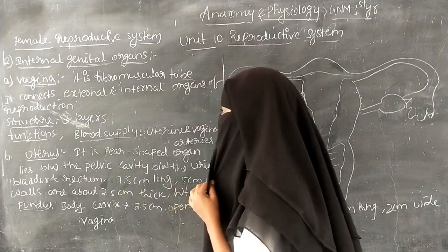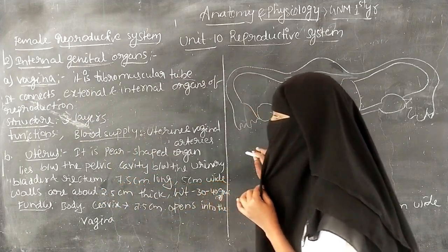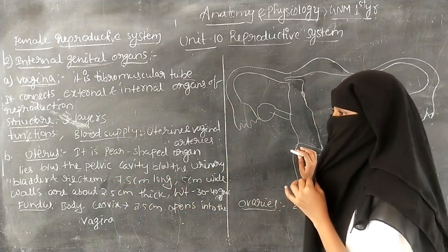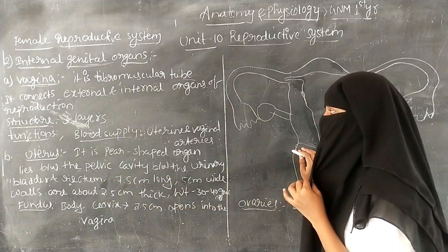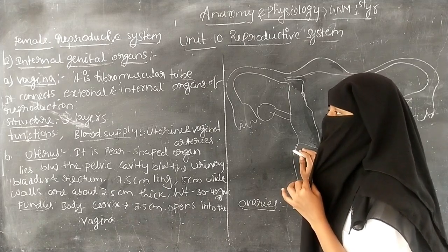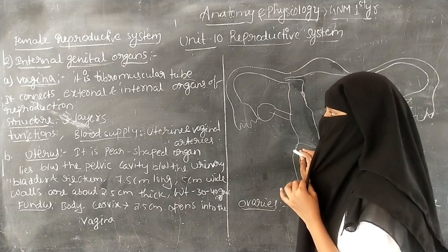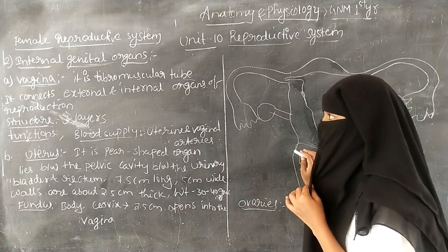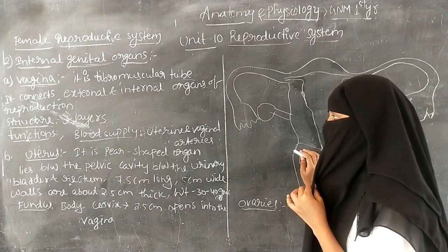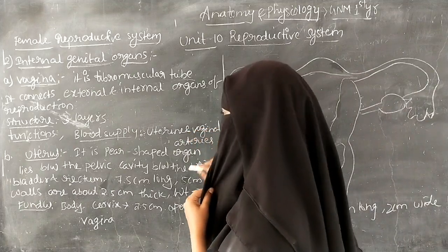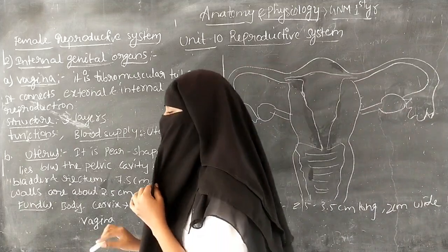The blood supply to the vagina is provided by the uterine and vaginal arteries.